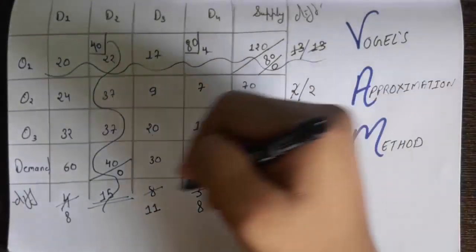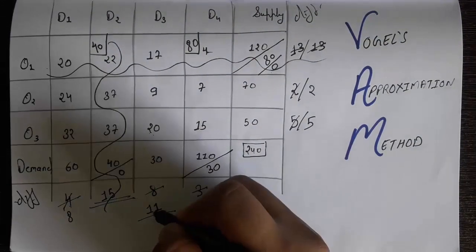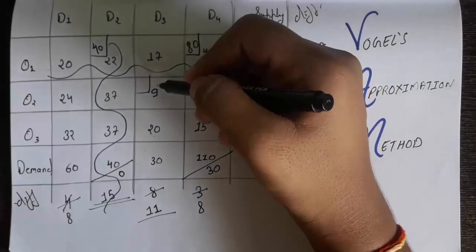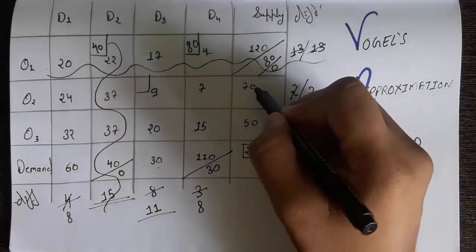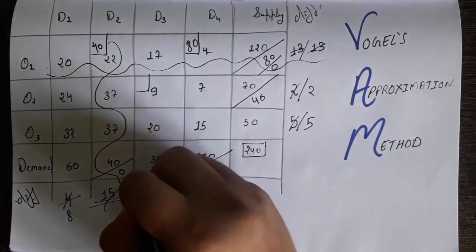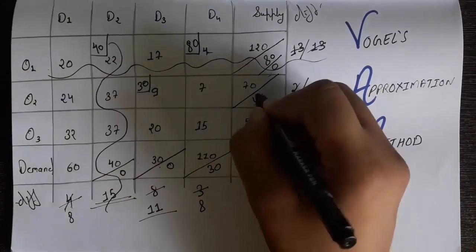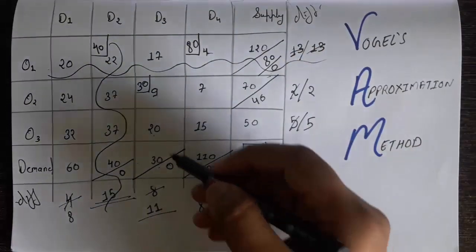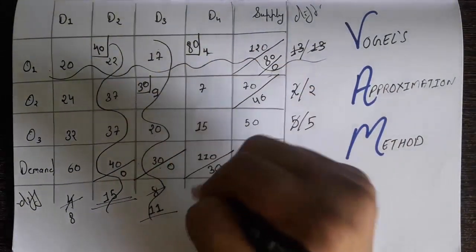Now find the largest difference among the remaining values. The largest is 11, which belongs to column D3. We look at D3 and find the smallest number, which is 9. We make a box there. The value 9 intersects at a supply of 30 and a demand of 70. The minimum is 30, so demand becomes 70 minus 30 equals 40, and supply becomes 0. We write 30 in the allocation cell, then remove column D3.